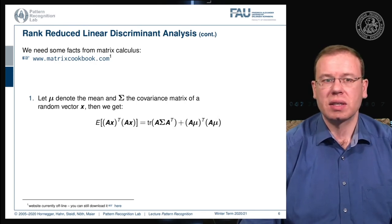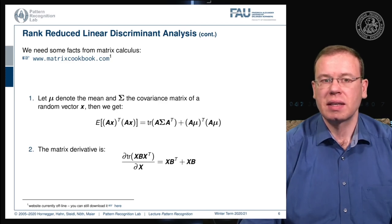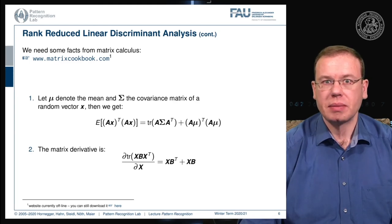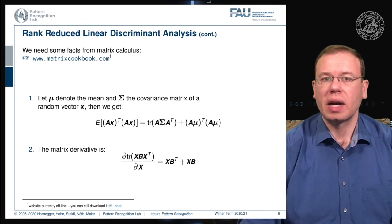This trace leads to the second shortcut: the matrix derivative of a trace with respect to A — or equivalently x — can be rewritten as x times B-transpose plus x times B. If B is a covariance matrix, then B-transpose equals B due to symmetry, and this simplifies to 2x times B.